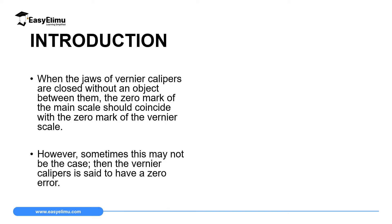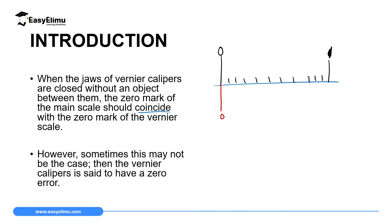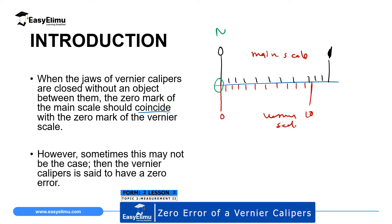Under normal circumstances, when the jaws of Vernier Calipers are closed without an object between them, the zero mark of the main scale should coincide with the zero mark of the Vernier scale, and in that case we say the instrument does not have an error. If you have your main scale zero here and subdivisions between zero and one, the Vernier scale zero should coincide exactly with the main scale zero — and in that case there is no error.